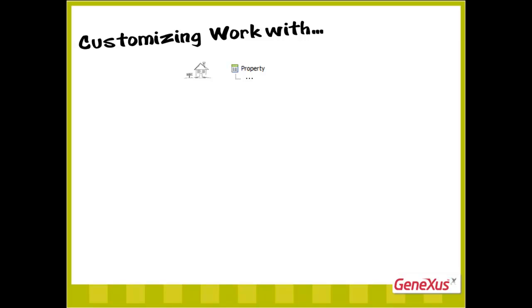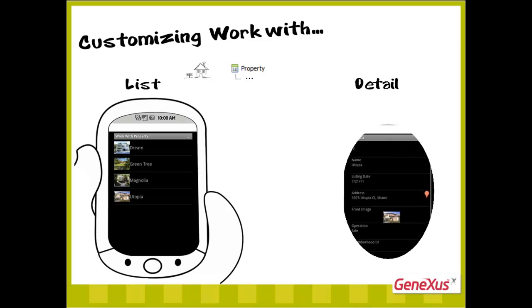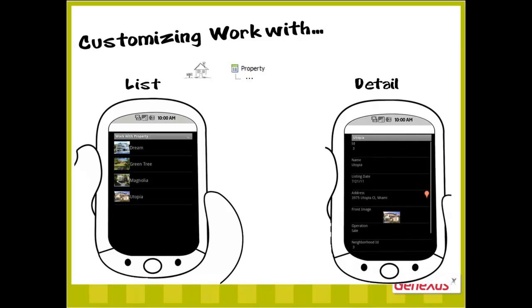As we know, the specification to have it work with a particular transaction automatically implements a screen to show the list of elements, and also another screen to show the detailed information of a specific element. So, the first thing we can customize is the info shown to the user, and the way in which this info is shown.